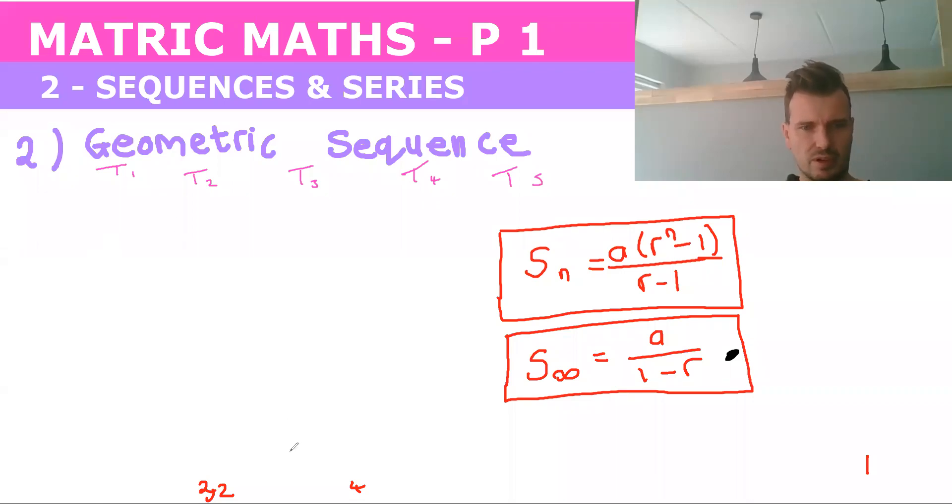Okay, let's look at something a little bit harder. Say they told you that the first term of the sequence is two and the fifth term is 32.